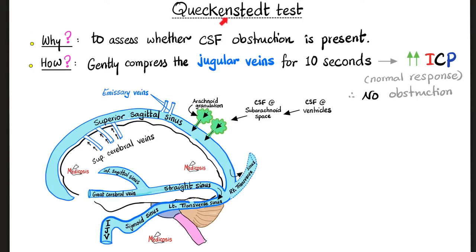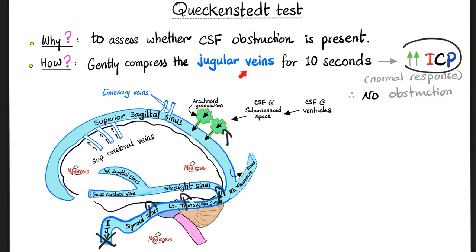Next, a very important test known as the Queckenstedt test, used to assess whether there is CSF obstruction. If there is obstruction, the test is abnormal; if everything is communicating, it is normal. How does it work? CSF eventually drains into the jugular veins, so if you compress the jugulars, the pressure rises in the cerebrospinal fluid. On the lumbar tap connected to a manometer, the CSF pressure rises when you compress the jugular veins for 10 seconds. When you release the compression, the pressure drops back to normal. If it increases on compression and drops on decompression, this is normal — a negative test. Otherwise it's a positive test indicating probable obstruction.